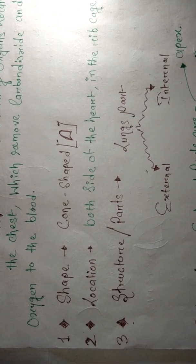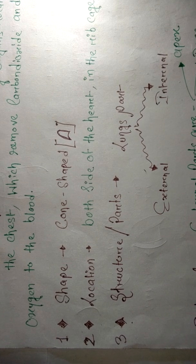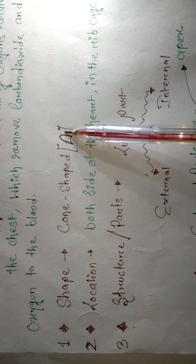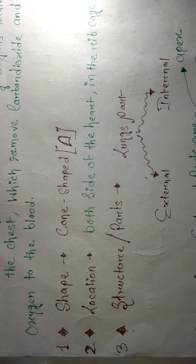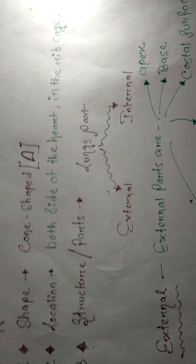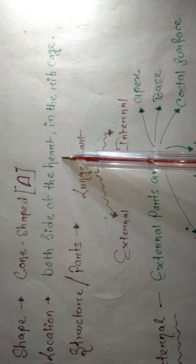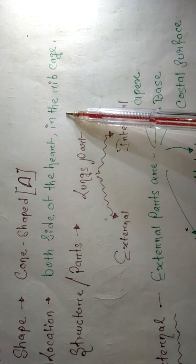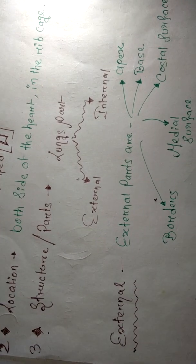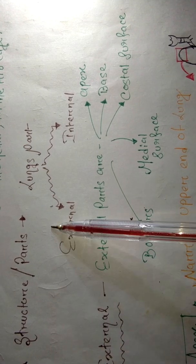The second point is the shape of lungs. Lungs have a cone shape. The location is on both sides of the heart — between the two lungs we have the heart — inside the rib cage.